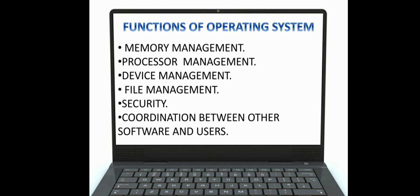Next is processor management. The processor is what we call the CPU — the main part of the computer. The operating system allocates the processor, that is the CPU, to processes, and deallocates the processor when it is no longer required. When you switch off the computer system, the operating system deallocates your processor.